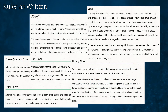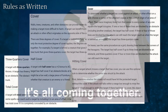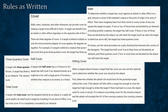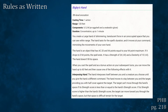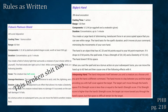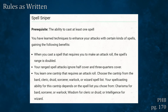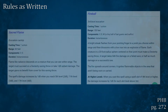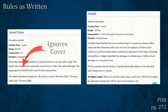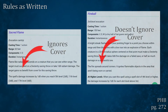One thing we can talk about is how certain spells and effects use cover. There are some spells like Bigby's Hand that specifically provide unconditional cover to a target, as well as some other abilities like the Spell Sniper feat that ignore certain types of cover. As a general rule of thumb, if an effect does not explicitly say it ignores cover, it doesn't ignore cover at all.